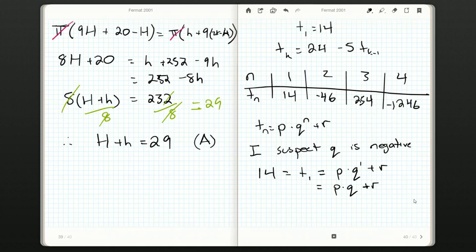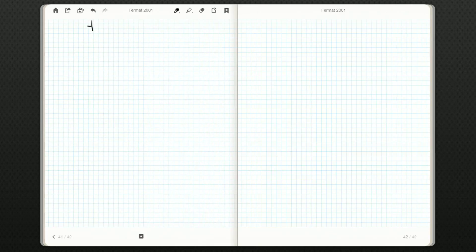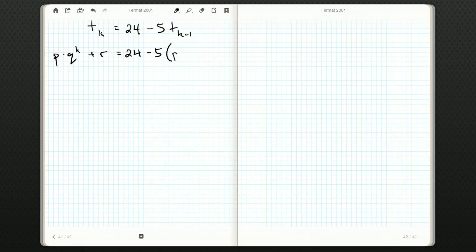But let's take a look at our recursive formula. We're going to plug numbers in there. So I know that tk is equal to 24 minus 5 tk minus 1. Well, let's plug in our general formula. p times q to the k plus r should be equal to 24 minus 5. So maybe q is minus 5 here. Just guessing. So that's p times q to the k minus 1 plus r.